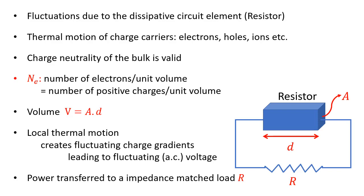The situation is basically this: this is a noise that arises in any dissipative circuit element. Wherever there is dissipation, you will see that the Johnson noise comes in. In terms of statistical mechanics, this is connected with something called the fluctuation-dissipation theorem, wherein the moment there is dissipation, there is an accompanied source of fluctuation. So dissipation is always accompanied by fluctuation. This is very fundamental, and this is one such manifestation of that very fundamental statistical physics theorem.